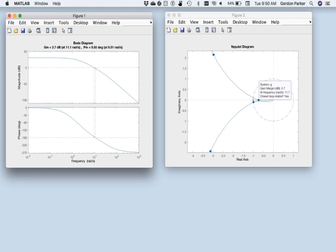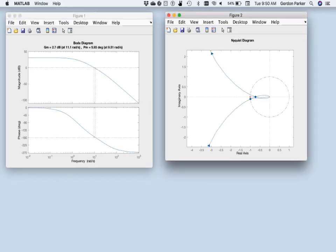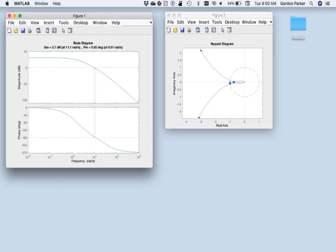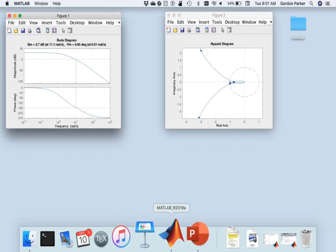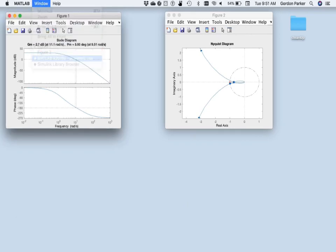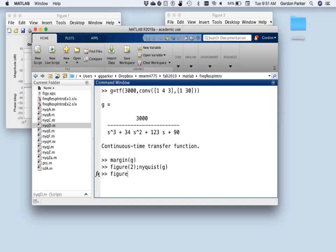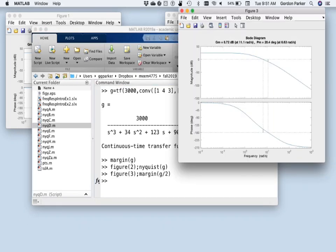So let's just decrease the loop gain just a little bit. So what I'm going to do is shrink this down. I don't want to lose all of this wonderful stuff. And let's bring this up. As long as I don't make too many mistakes here. So I'm going to go figure 3, and how about we go margin G divided by 2. So I'm going to decrease the loop gain by a half.